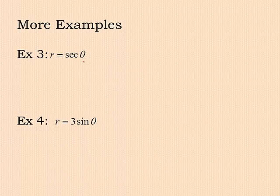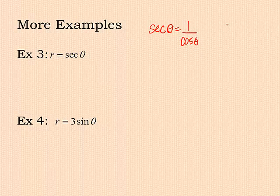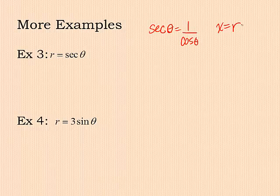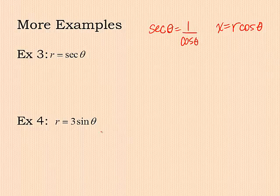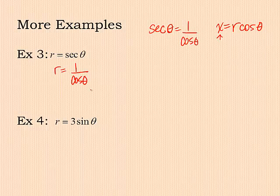Number three, r equals the secant of theta. Now, hold up. We don't have any conversions that include secant. But if you remember, what is secant? Secant is one over the cosine. We do have a conversion that says that x is the radius times the cosine of theta. So we need to get it to x. We need to convert our secant to cosine. So what I'm going to do is say r equals one over the cosine of theta. We're still in a predicament.